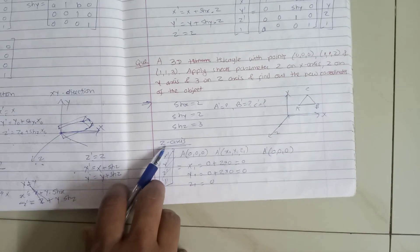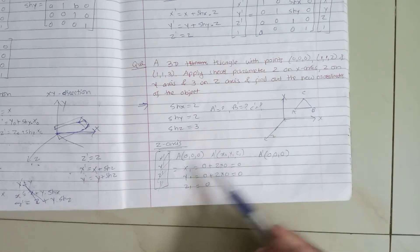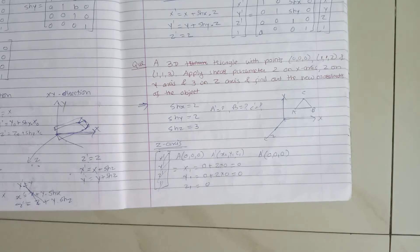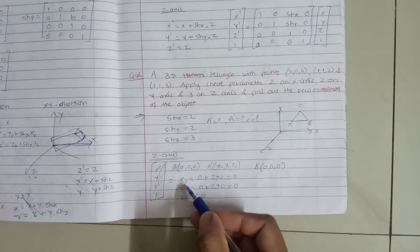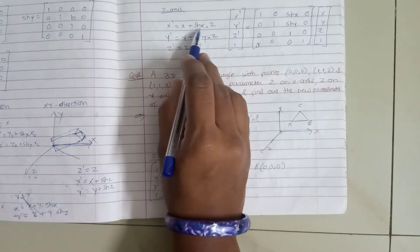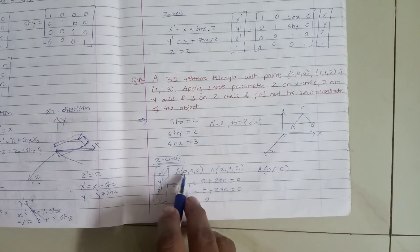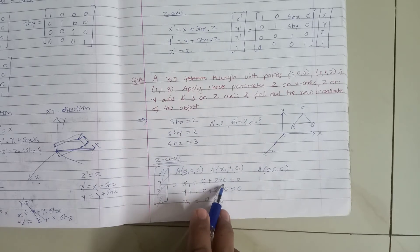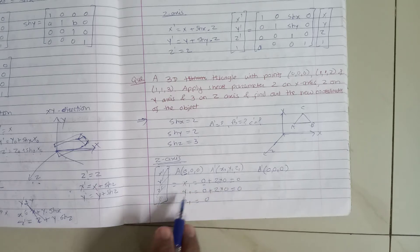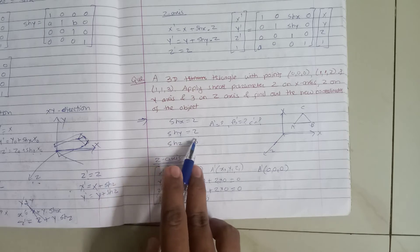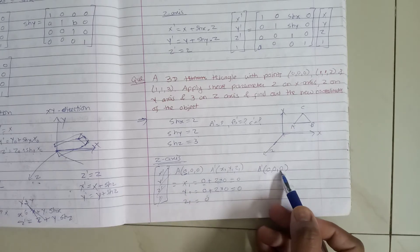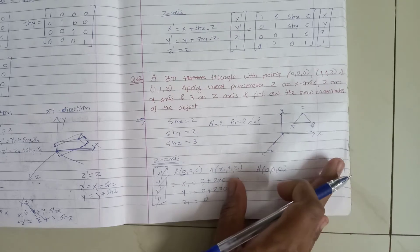Now if we apply shearing along z-axis, the equation is: x1 = x + shx × z, y1 = y + shy × z, z1 = z. For point A with value (0, 0, 0): x1 = 0 + 2 × 0 = 0, y1 = 0 + 2 × 0 = 0, z1 = 0. So A' along z-axis becomes (0, 0, 0).